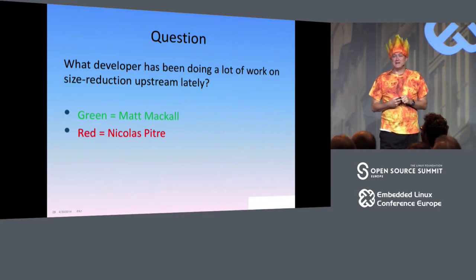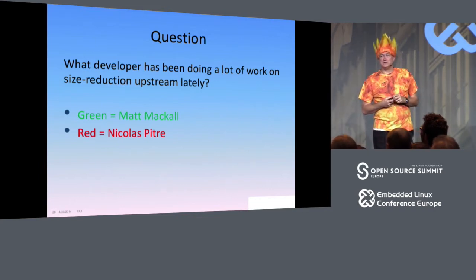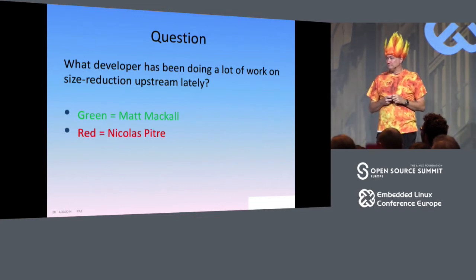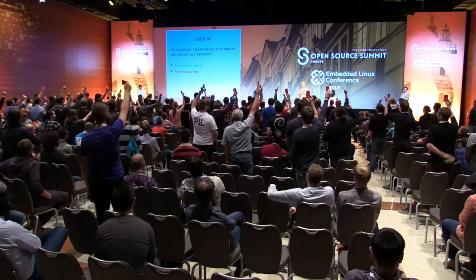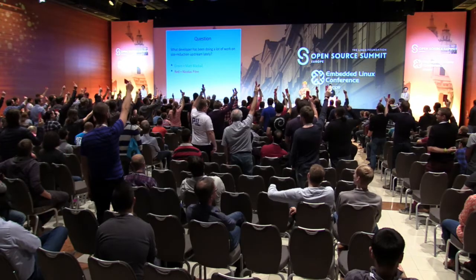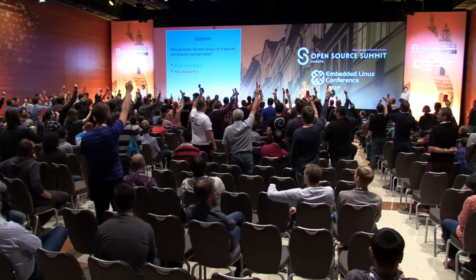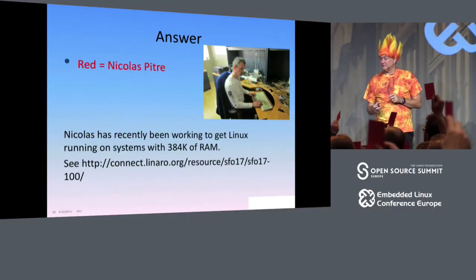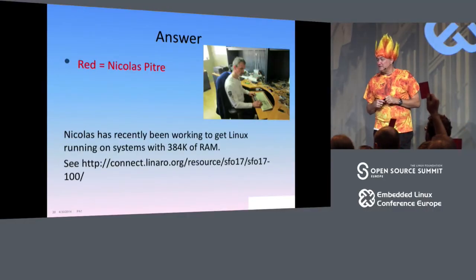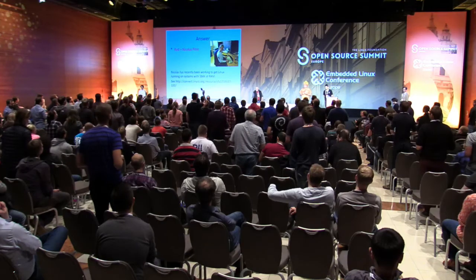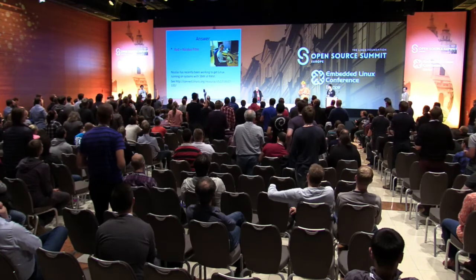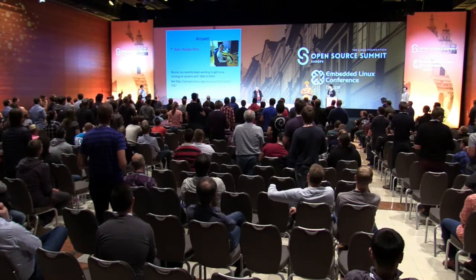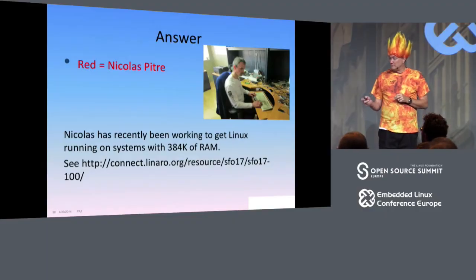What developer has been doing a lot of work on size reduction upstream lately — is it Matt Mackall or Nicholas Pitre? It's Nicholas Pitre. He's been trying to get Linux running on a system with 384K of RAM, which is fairly impressive.